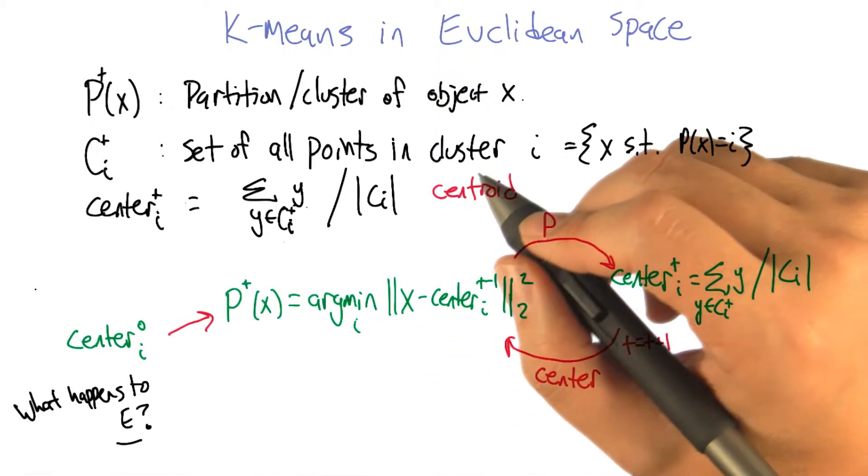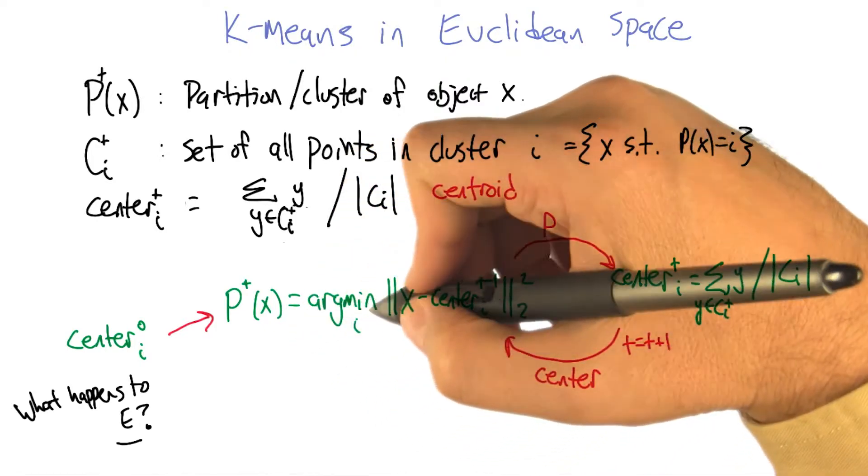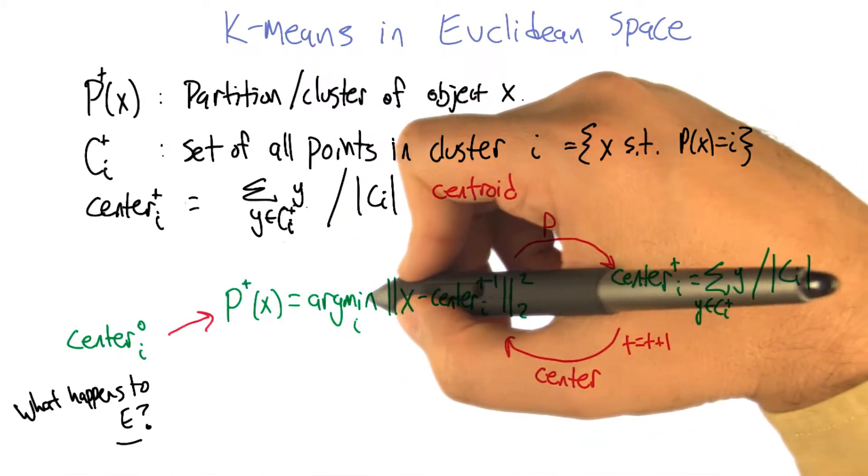Alright, so let's see if we can figure out what happens to this e function as in one step we update the partitions, and the other step we update the centers. So let's look at the partition one first.